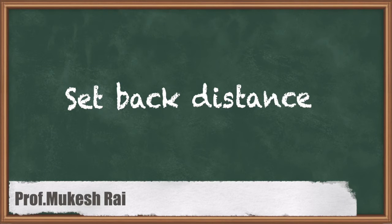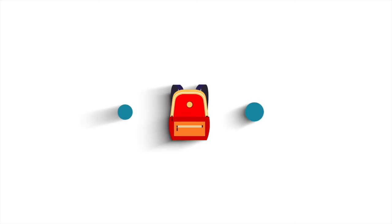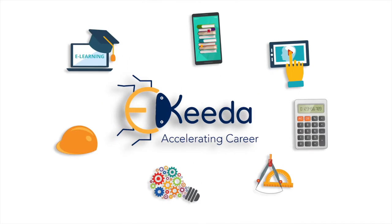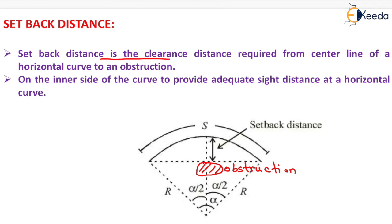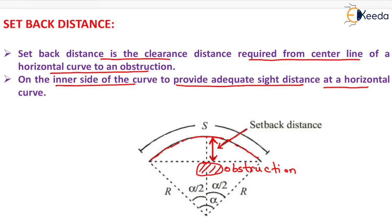Hello students, today we are going to study setback distance. Setback distance is the clearance distance required from the centerline of a horizontal curve to an obstruction. The distance required from the centerline of a horizontal curve to an obstruction is known as setback distance. To provide adequate sight distance at a horizontal curve, it is generally provided on the inner side of the curve.